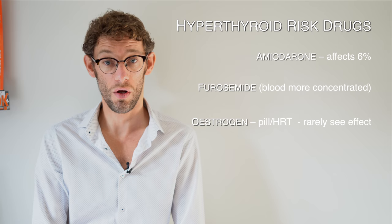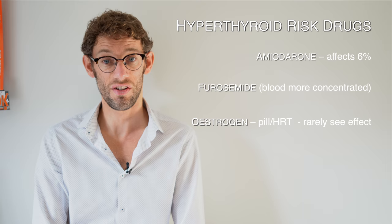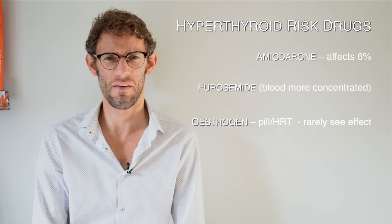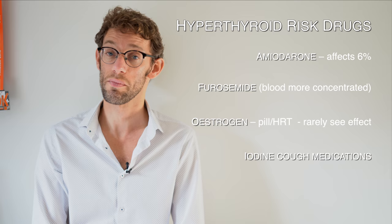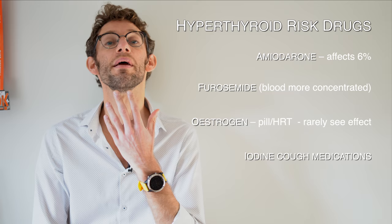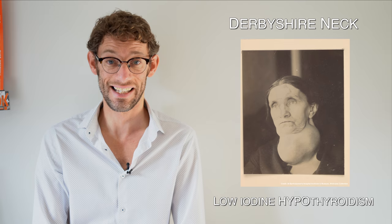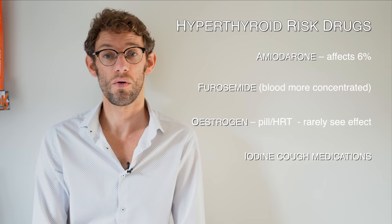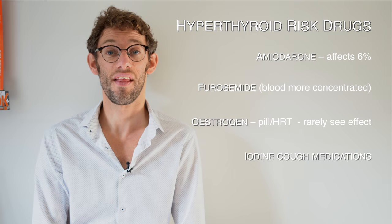The progesterone-only pill is associated with hypothyroidism, but oestrogen and HRT can potentially cause hyperthyroidism, though this is a very rare side effect. Iodine-containing medications are also worth considering, since iodine stimulates the thyroid gland. Classically, in places like Derbyshire — the furthest inland point from the sea with the least iodine in the food — patients can develop hypothyroidism and a large goitre called Derbyshire neck. Conversely, if a patient takes too much iodine from various sources, including some cough medications, that can push the thyroid to become overactive.